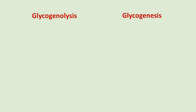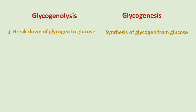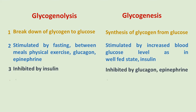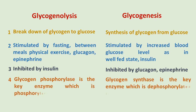Comparing glycogenolysis and glycogenesis, there are several key differences. Glycogenolysis is dissolution of glycogen to glucose, while glycogenesis is formation of glycogen from glucose. Glycogenolysis is triggered by fasting between meals, physical exercise, glucagon, and epinephrine, while glycogenesis is triggered by an upsurge in blood glucose level as in a well-fed state, and by insulin. Glycogenolysis is inhibited by insulin, but glycogenesis is inhibited by glucagon and epinephrine. Glycogen phosphorylase is the key enzyme in glycogenolysis and is phosphorylated in its active form, while glycogen synthase is the key enzyme in glycogenesis and is dephosphorylated in its active form.